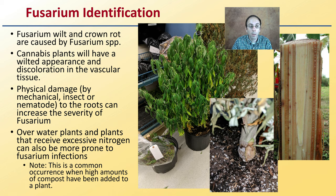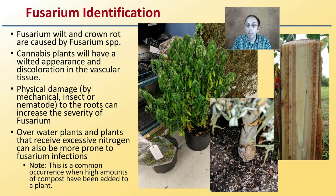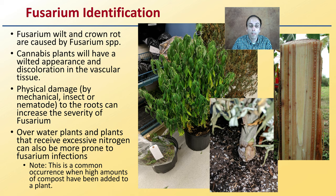Physical damage by mechanical insect or nematodes to the roots can also increase the severity and rate of spread of fusarium. Additionally, if a grower overwaters plants or plants receive excess nitrogen, this can cause them to be more prone to fusarium infections. Note this is a common occurrence when high amounts of compost have been added, as this increases water-holding capacity as well as typically nitrogen, which encourages fusarium to proliferate in that substrate.